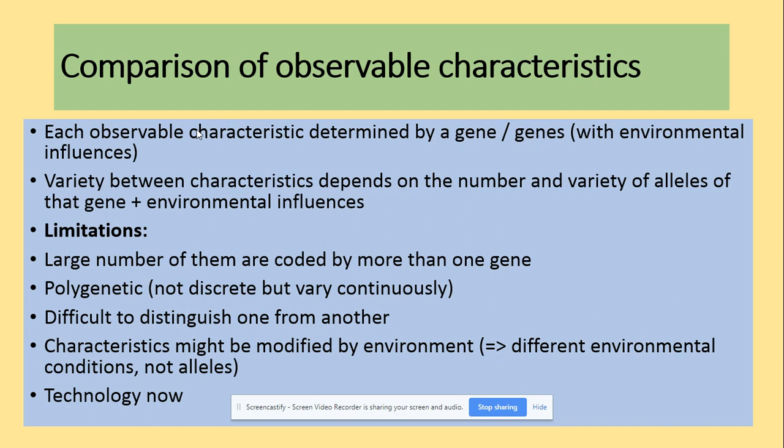Limitations of observable characteristics include: a large number are coded for by more than one gene — we could be dealing with polygenic traits. There is difficulty distinguishing differences from one another. Characteristics might be modified by the environment, so we are not looking at specific genes. We now have technology that allows us to look at relationships due to genes rather than just observable characteristics.